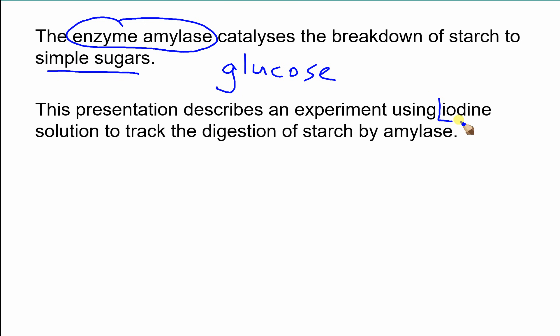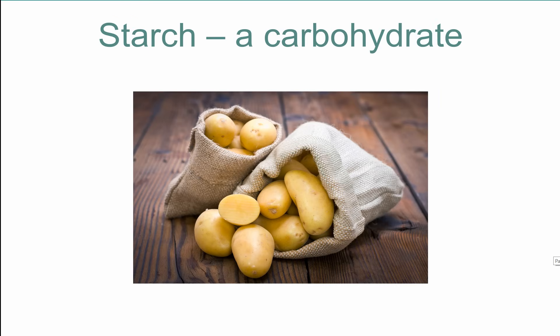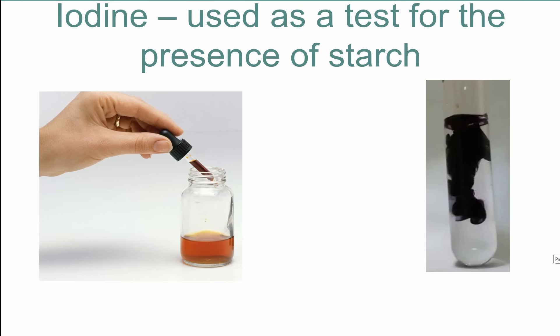The presentation is going to explain how iodine is used as a test for starch. We can use this test to track the digestion of starch by amylase. We know that starch is a type of carbohydrate — we find it in potatoes, rice and pasta. Iodine is a chemical, and one of its uses is to test for the presence of starch, so it's known as the starch test.